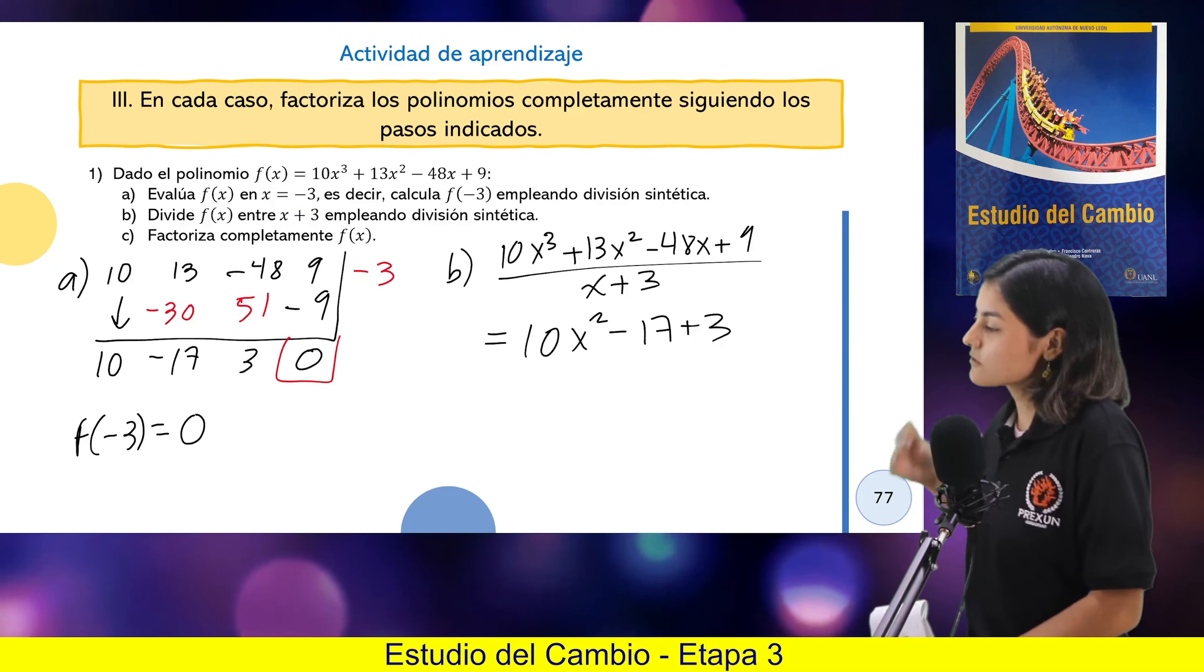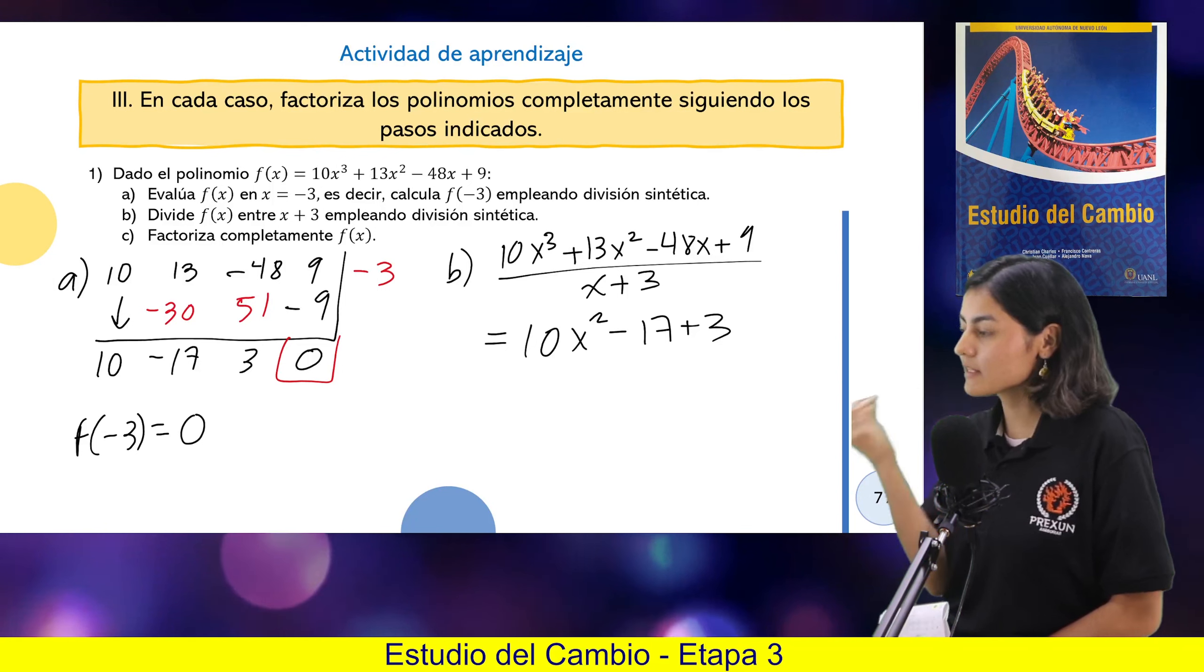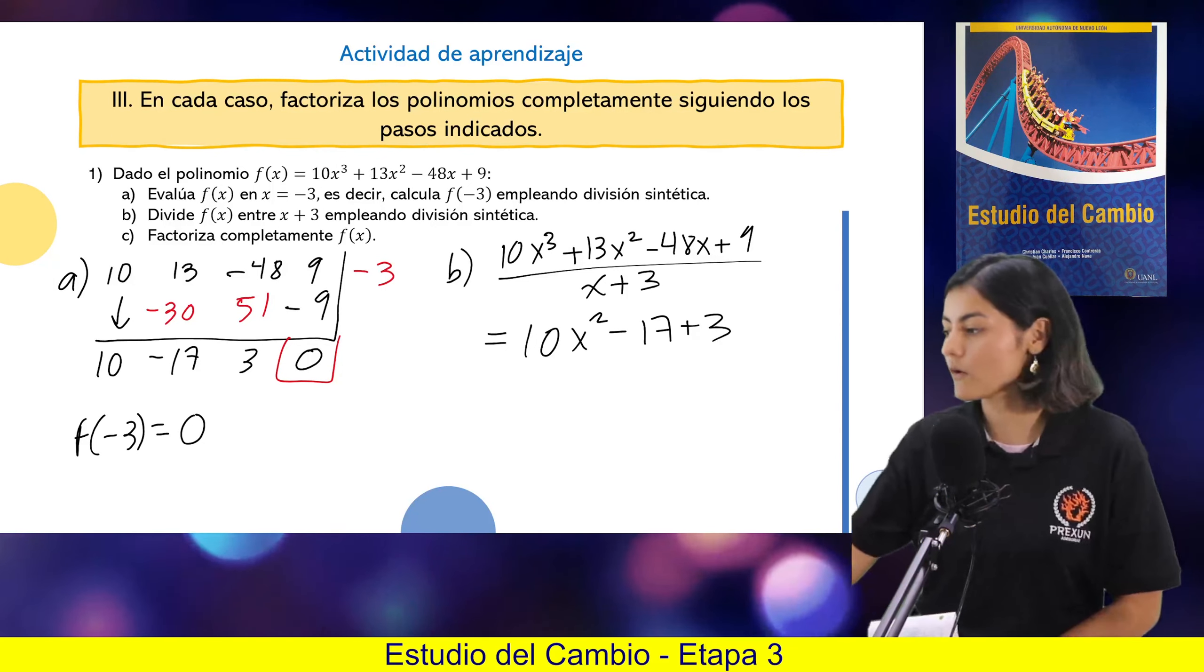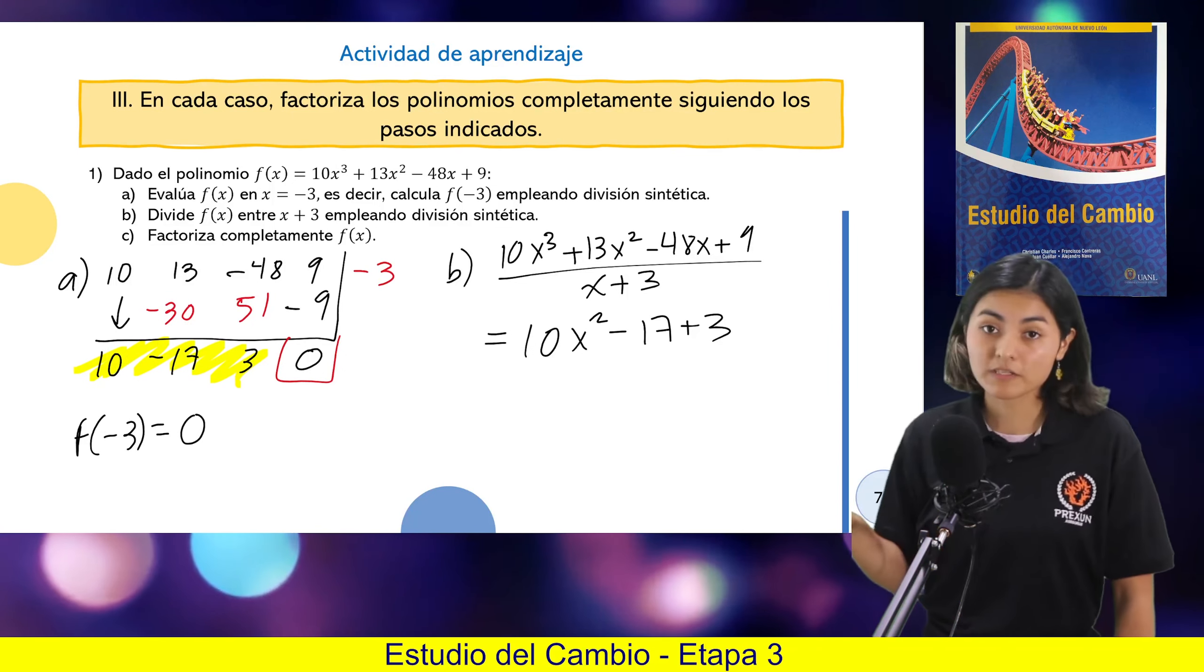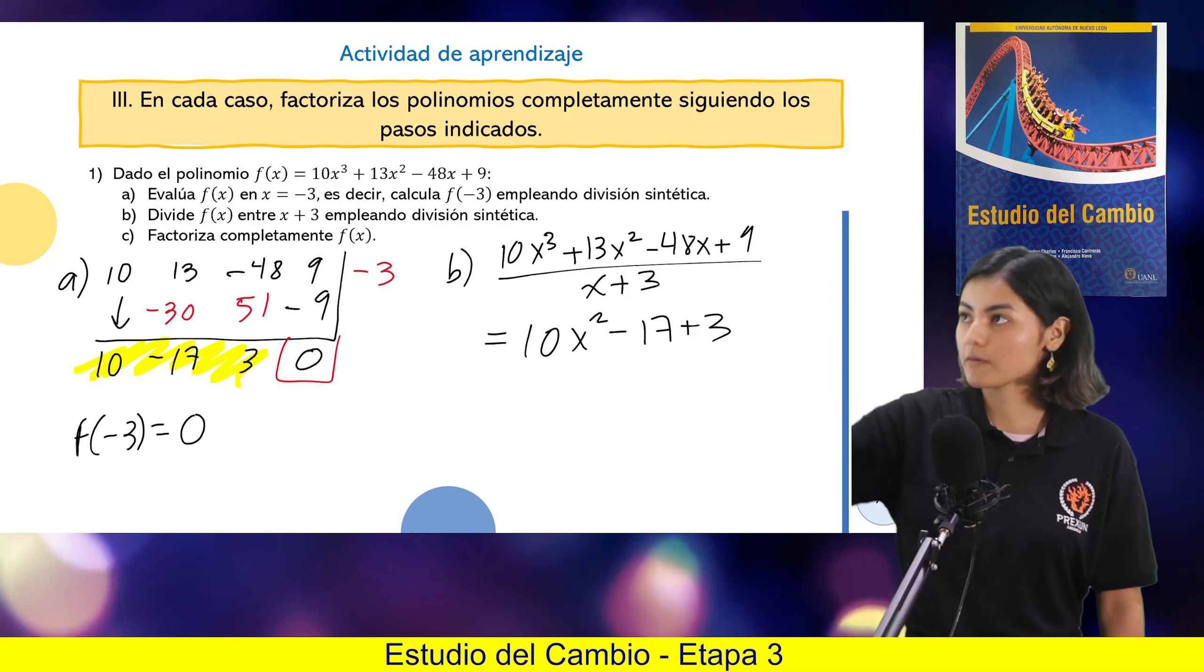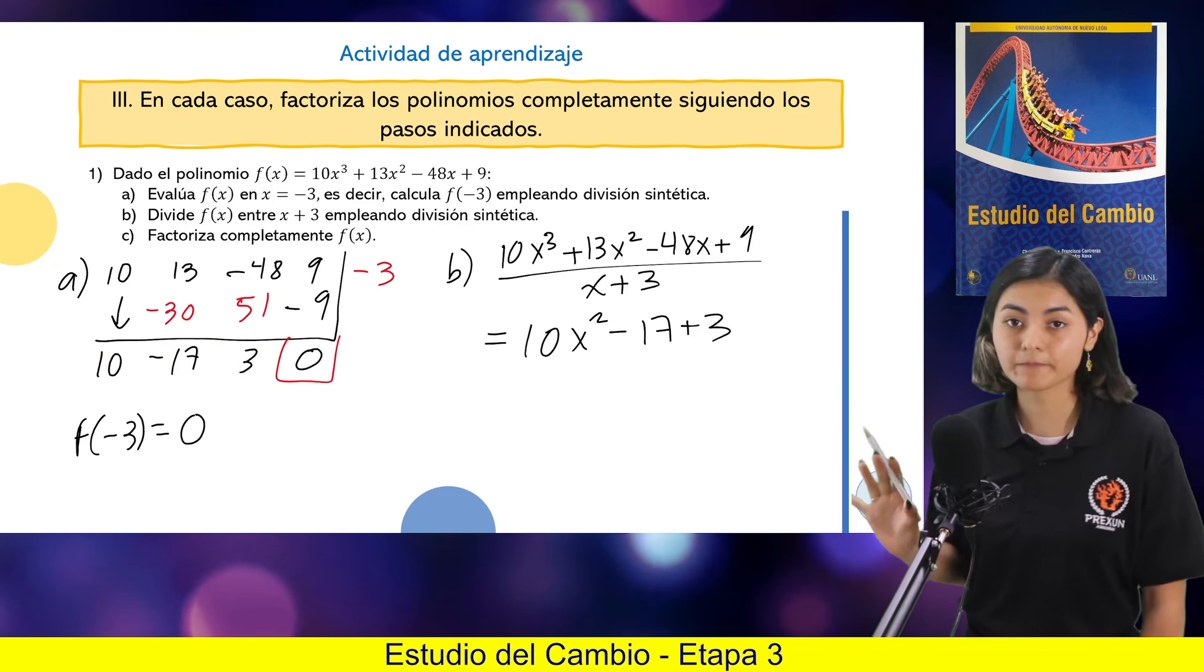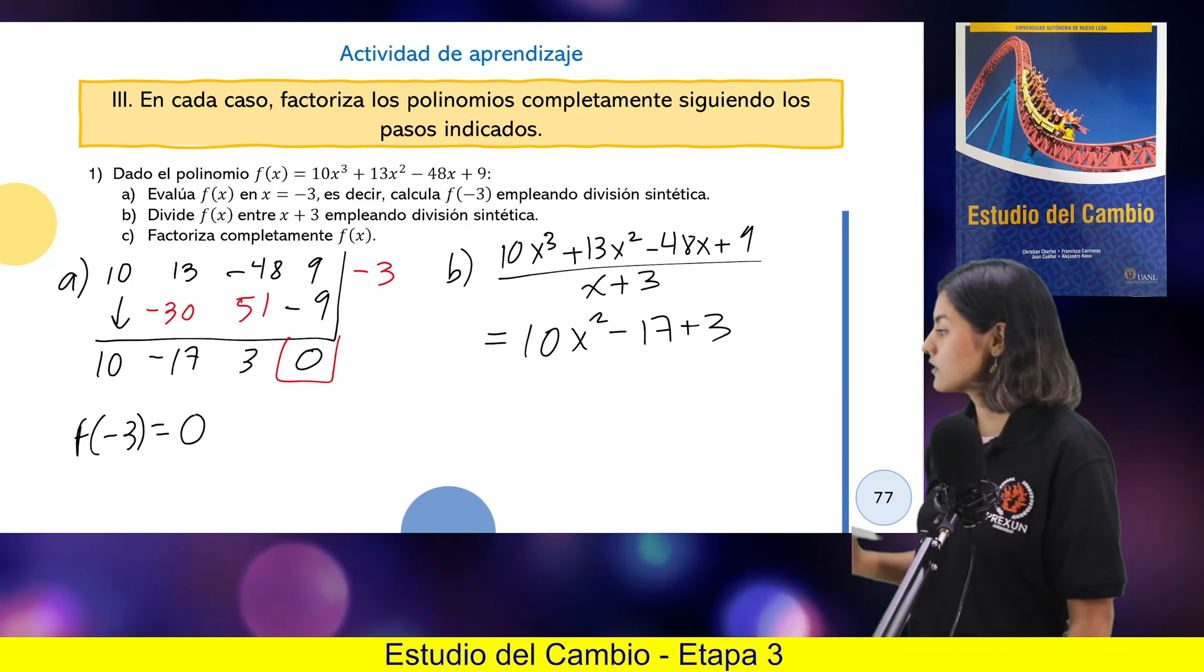Entonces, para el inciso B, pues realmente no hay que volver a hacer nada, simplemente hay que fijarnos en el inciso A y copiarnos estos coeficientes que son los del cociente. Porque nos pide eso, el cociente. Hasta ahí va todo bien.